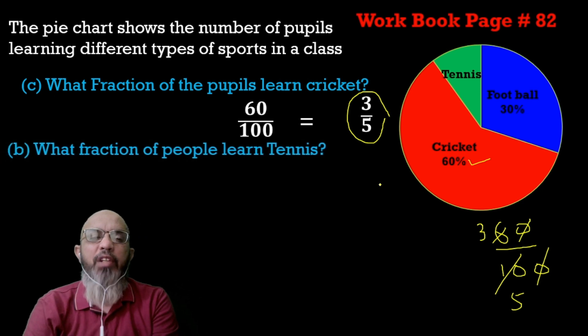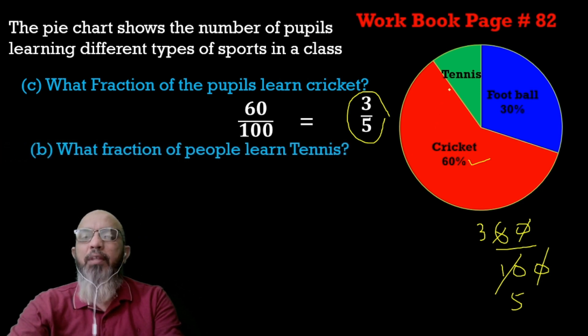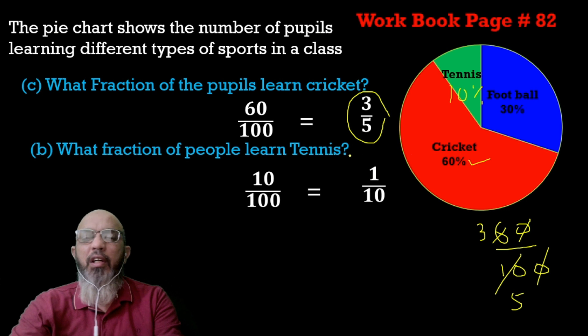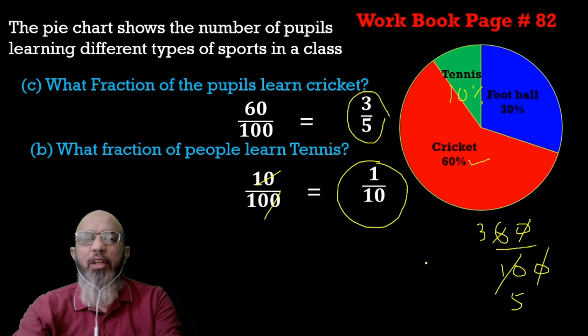What fraction of the people learn tennis? Ten percent of students learn tennis, so the fraction form is 10 over 100. When we simplify, zeros cancel and we get 1 over 10. I hope you understand — it's quite an easy chapter.